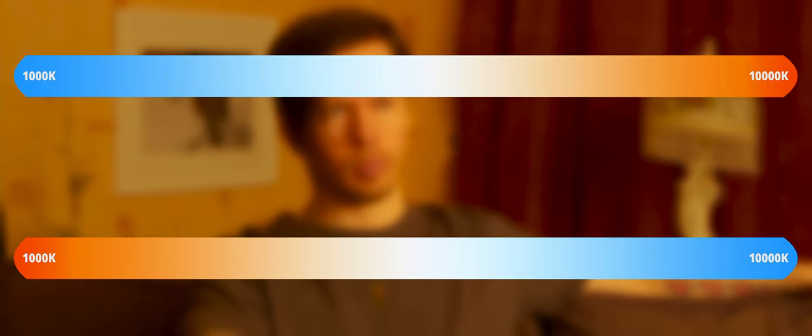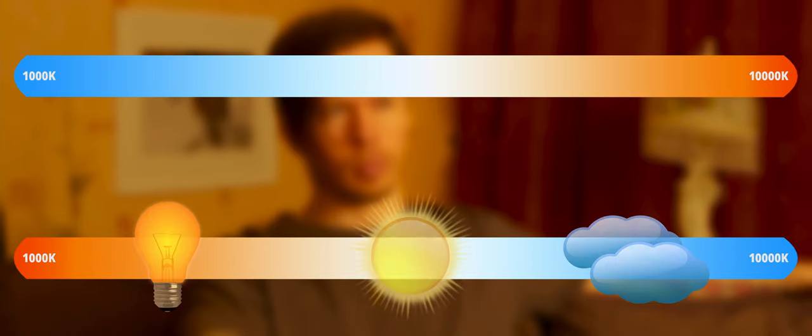A camera's white balance is also set using the Kelvin scale, although it can be a little confusing at first, as setting the lower temperatures in camera cools down the image whilst higher temperatures warm it up — which is the opposite to what we know about the Kelvin scale when relating to our light sources.